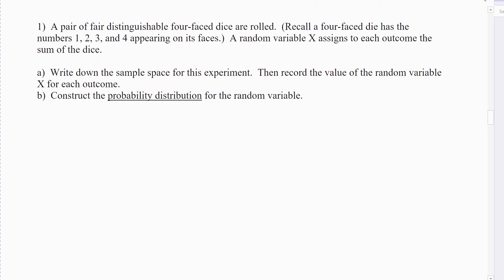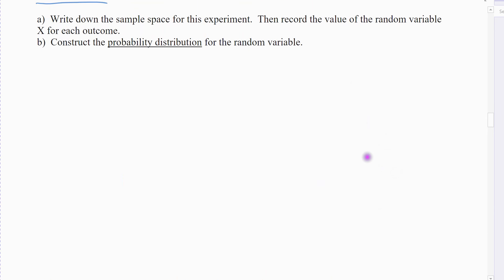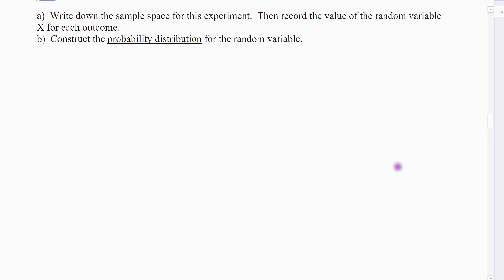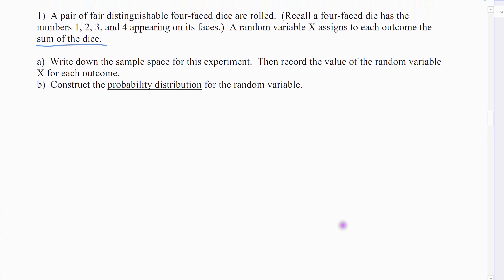Let's practice with a couple of examples. In the first example, suppose we have a fair distinguishable four-sided die — two pyramid-shaped dice with numbers 1 through 4. The random variable X represents the sum of the dice. Part A is to write down the sample space, record the value of the random variable X for each outcome, construct the probability distribution, and then we'll do the histogram.